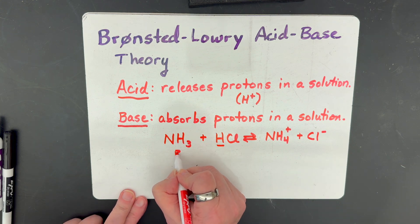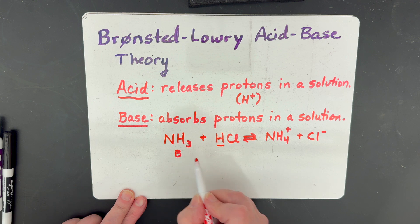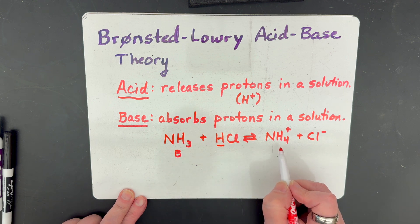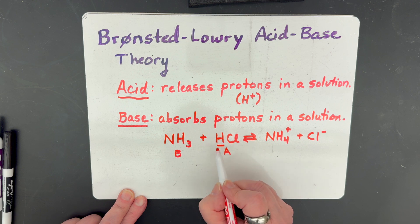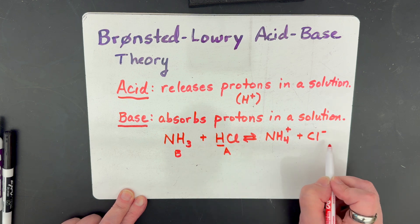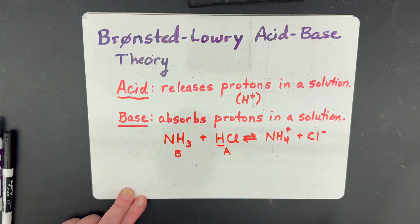This is our base, because when we look at it on this side, it has three hydrogens. When we look at it on this side, it has four, so it gained a hydrogen. And this is our acid, because if we look at it on this side, it was HCl, it had one hydrogen. When we find Cl on this side, it had zero hydrogens. And so it lost a hydrogen.